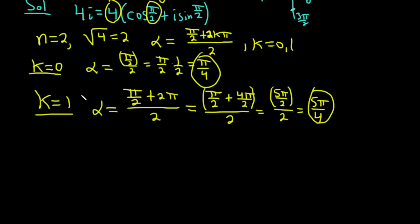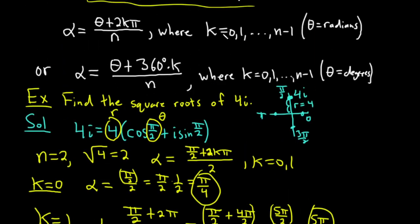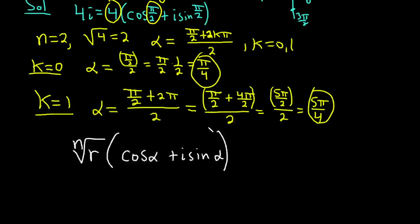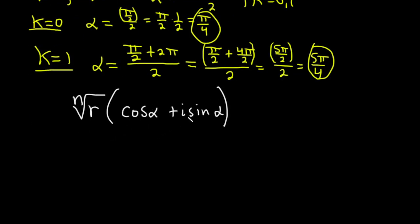And again, the formula is the nth root of r cosine alpha plus i sine alpha. That's the formula for the roots, where alpha is given by this formula here, which we just used. So we use the formula, so now all we do is plug in the different values of alpha.